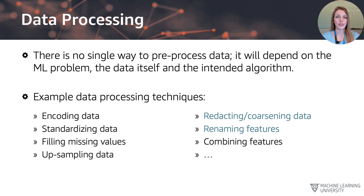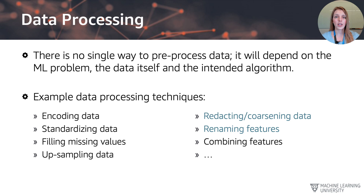A couple of example data preparation techniques: encoding data, standardizing data, filling in missing values, and potentially up-sampling data if we observe an imbalance in our exploratory data analysis stage. We also highlight techniques for fairness intervention, such as privacy preservation through redacting or coarsening the data. More generally, we can also look at correlations and potentially combine or reduce the number of features if we have correlated features in our dataset.